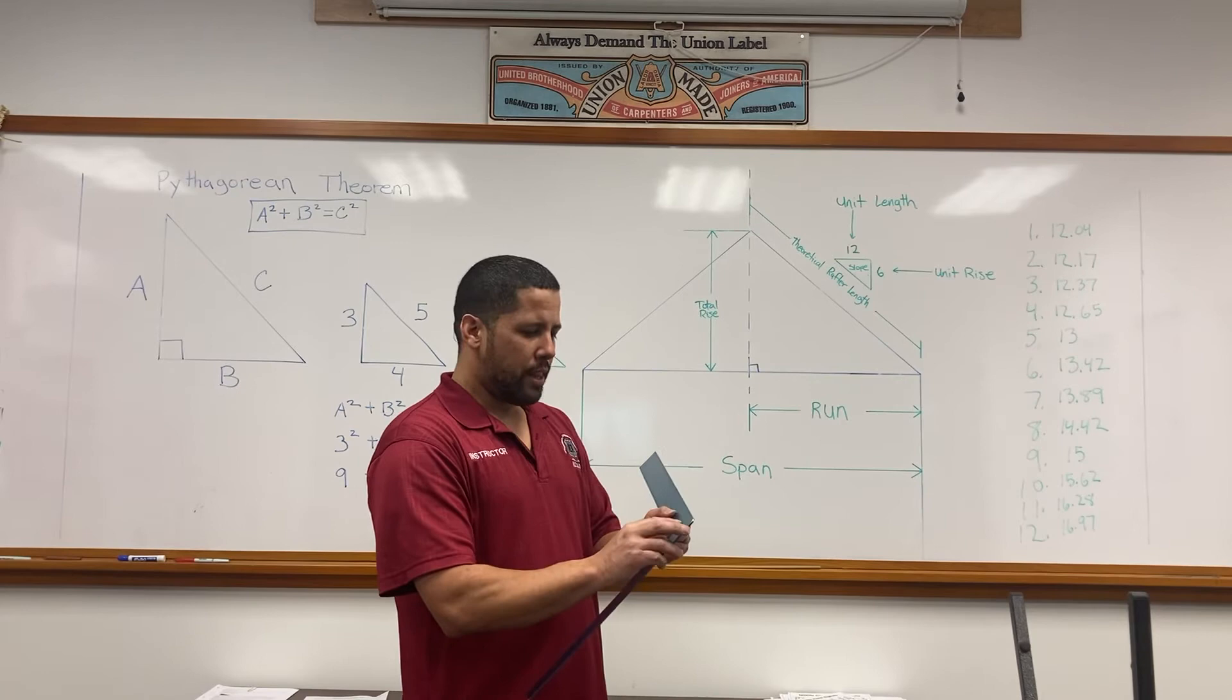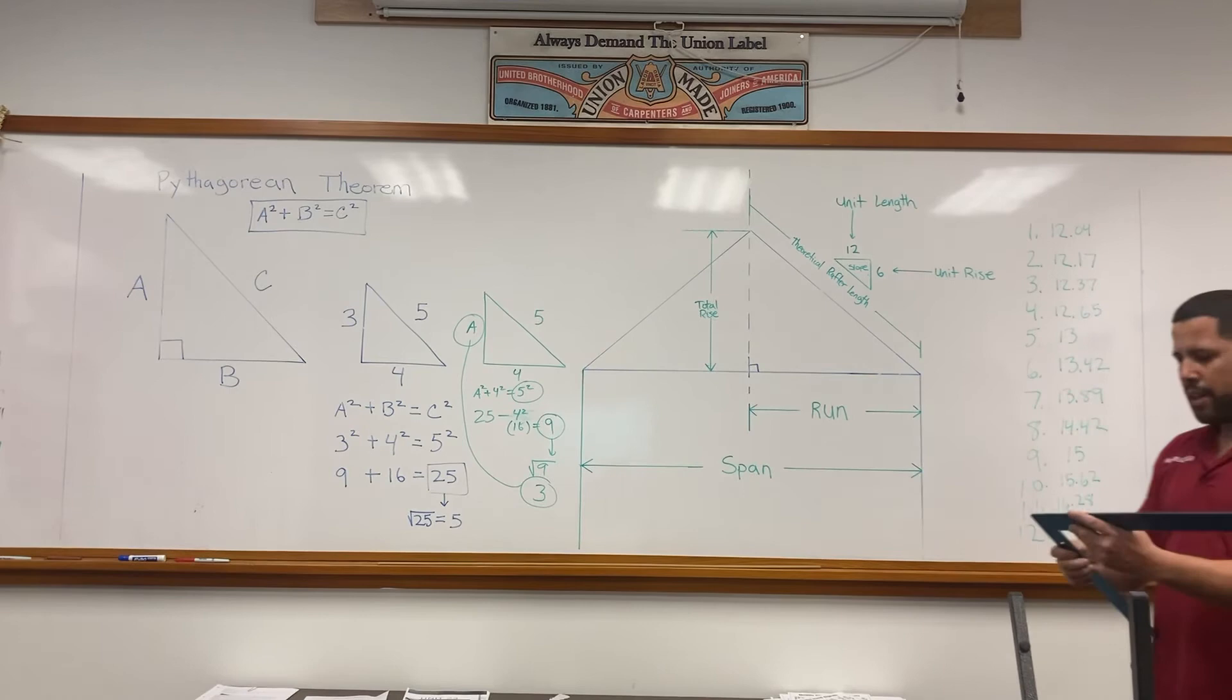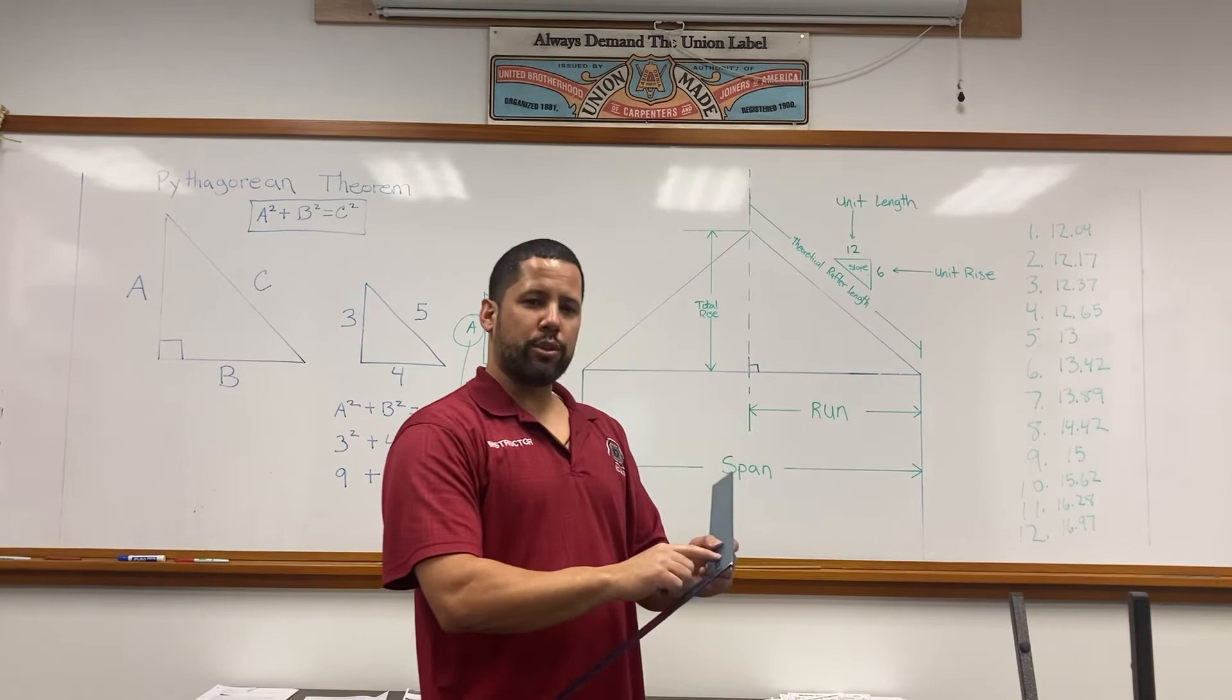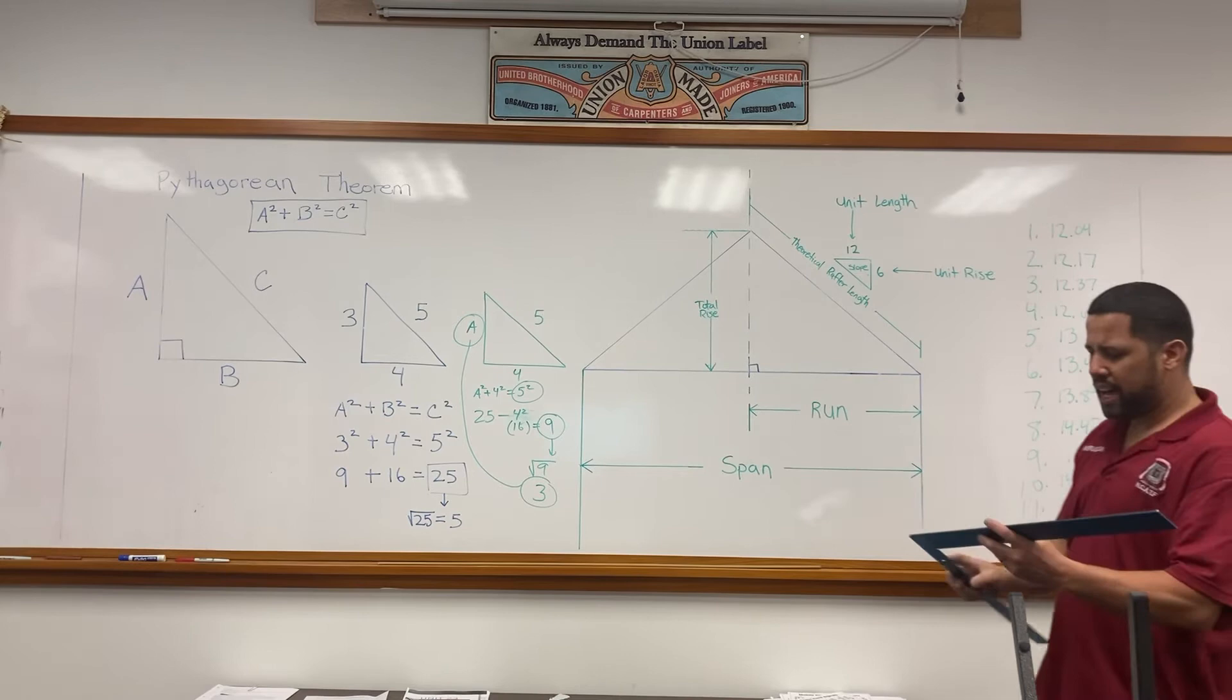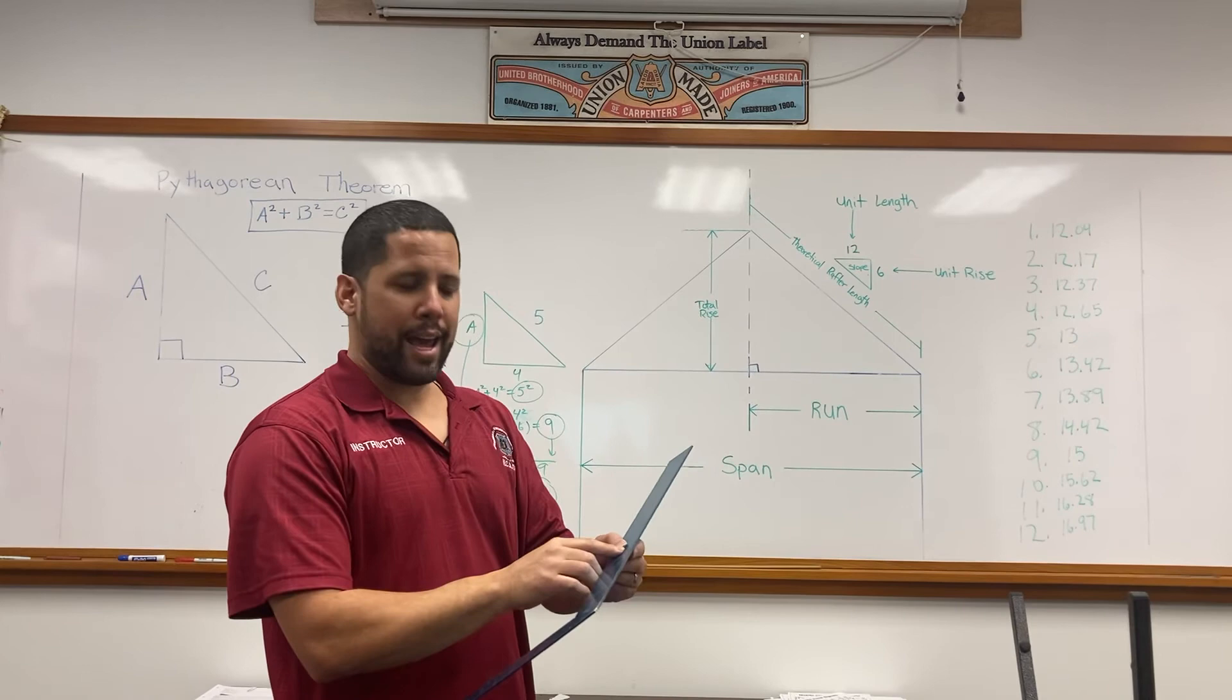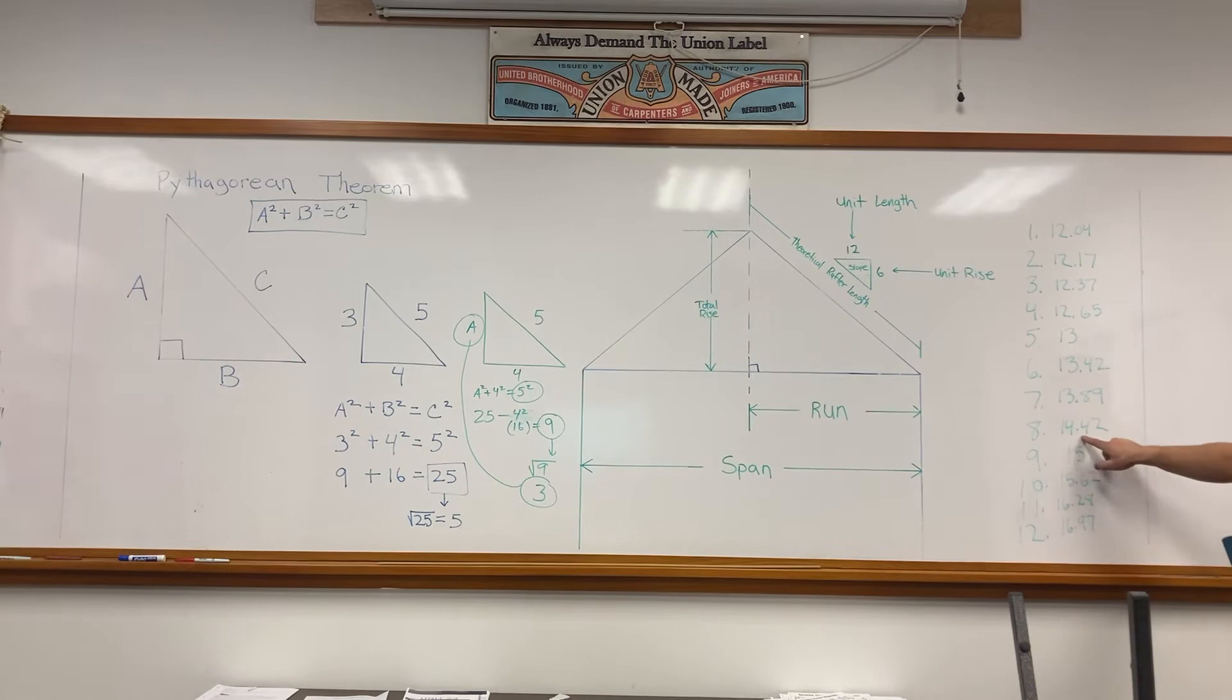Under the number 2, 12.17. Now take a look at your sheet. What does your sheet show on right triangle number 2? 12.17. Number 3, look under the 3-inch mark. 12.37 on my framing square. Let's look at your sheet. You have 12.37. Let's jump a few numbers to number 8. On my framing square, you have 14.42. Let's look at your sheet on number 8—14.42.